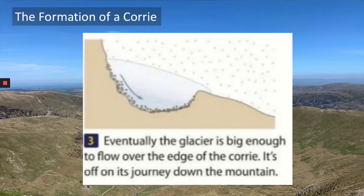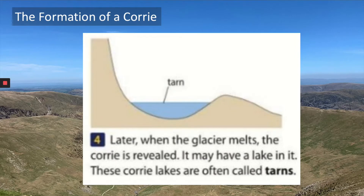Our glacier continues to grow as snowfall accumulates — we are still in the ice age with long winters. The glacier grows until it is above the rock lip of the corrie and can start to move downhill, eroding different features further down the valley. As we come to the end of our ice age, the glacier melts, leaving our over-deepened hollow. Meltwater accumulates in the over-deepened base, forming a small lake called a tarn. Tarns tend to stay in corries because glaciers form in areas of high rainfall, and that rainfall accumulates in the over-deepened base.